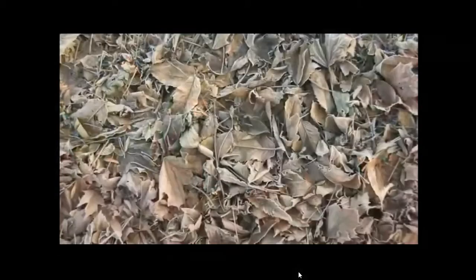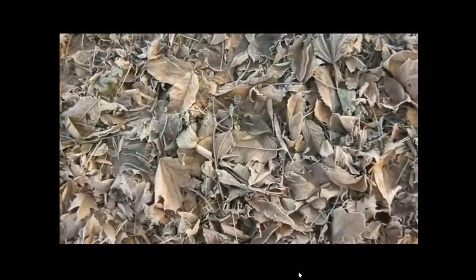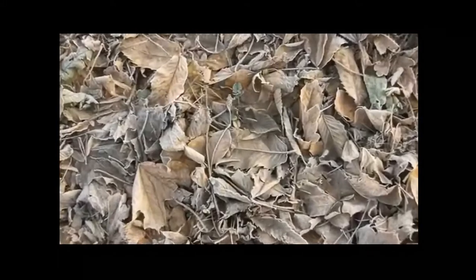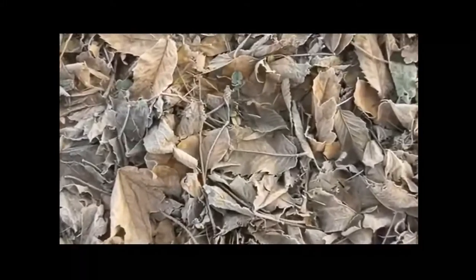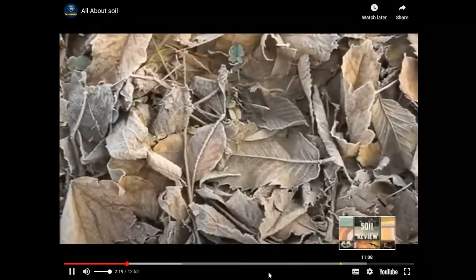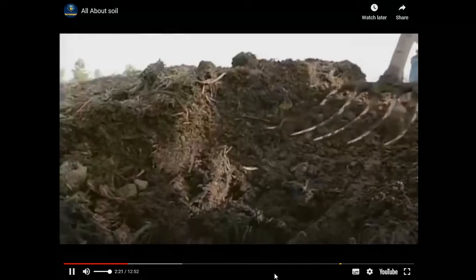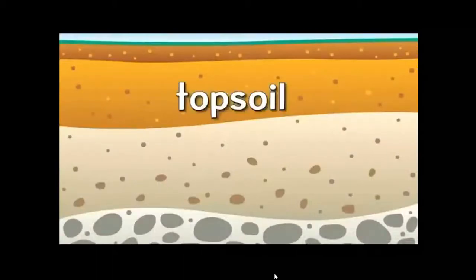Humus is made from things that were once alive, like leaves that fall from a tree. The dead leaves decay, or break down, and become part of the soil, giving it nutrients. Humus is a dark color and is found on the ground surface. There are three layers of soil.